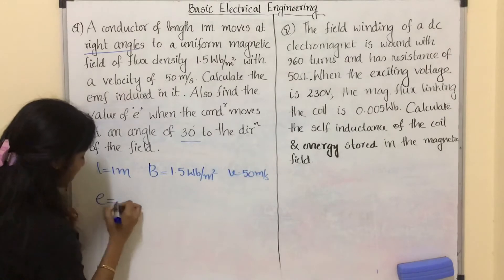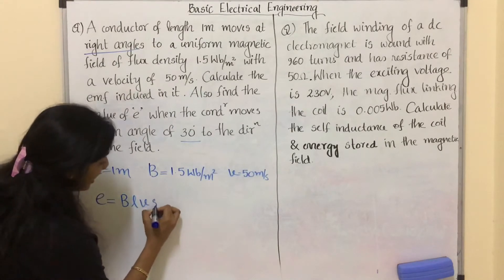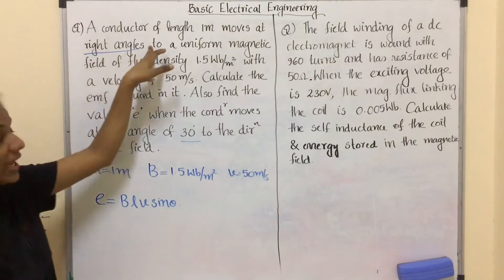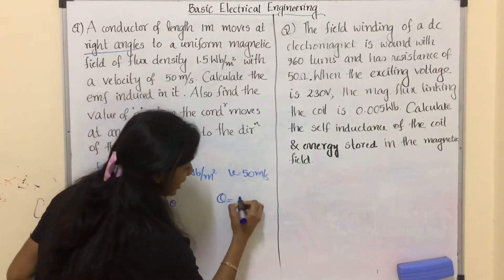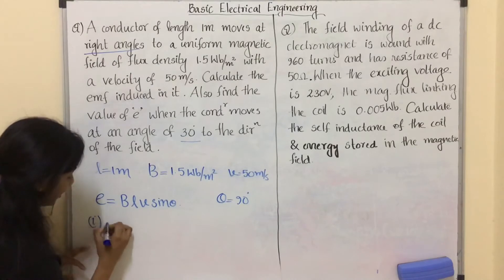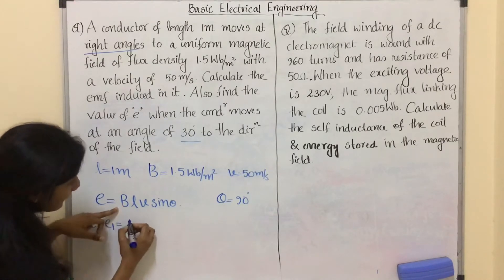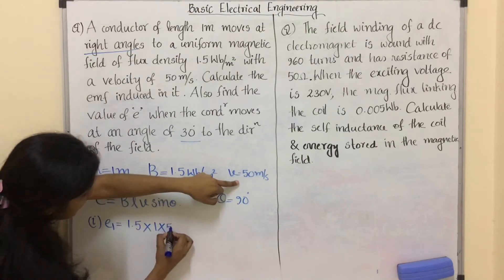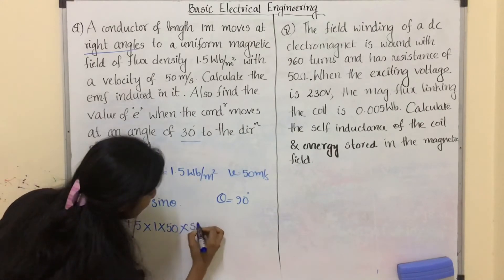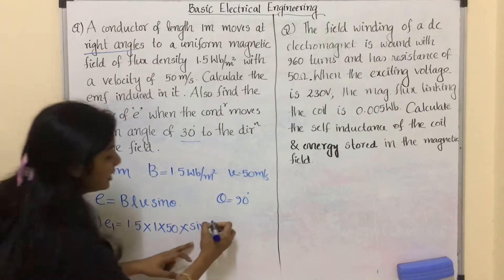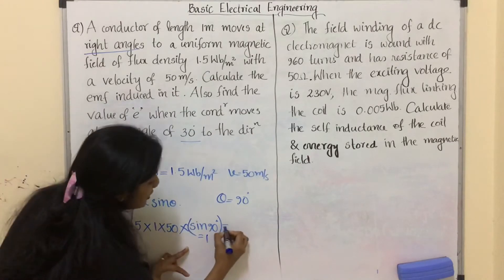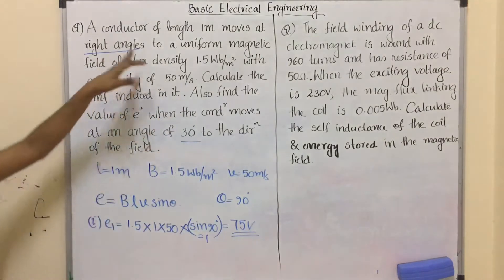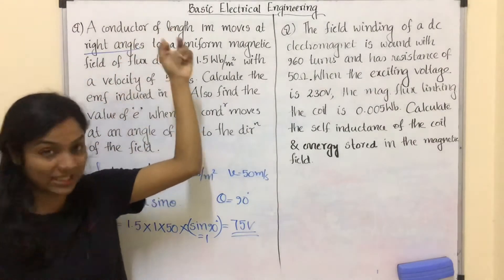Direct application of formula: in dynamically induced EMF, the formula to calculate induced EMF is e = Blv sinθ. In the question it mentions right angles, so theta is equal to 90 degrees. For part 1, E1 = 1.5 × 1 × 50 × sin90°. Sin 90 is equal to 1, so the value will be 75 volts — the induced EMF when the conductor moves at 90 degrees.